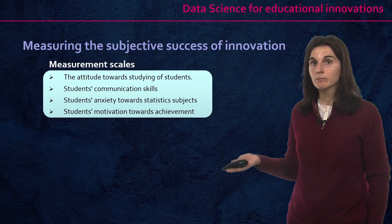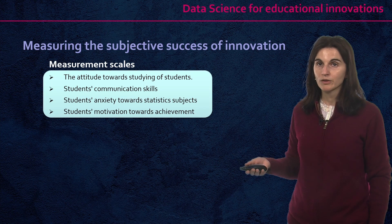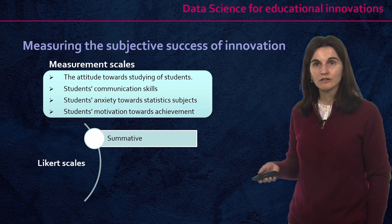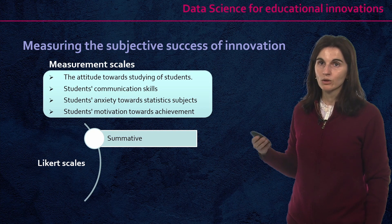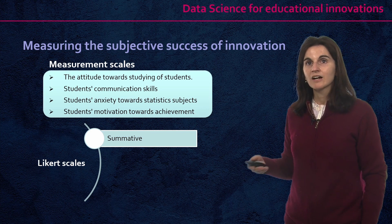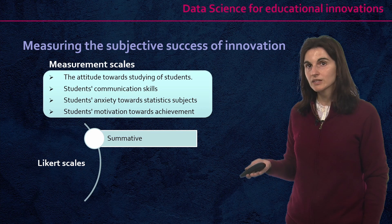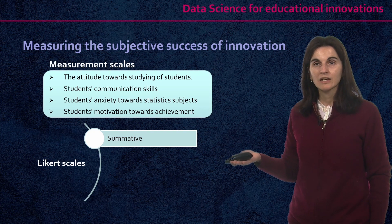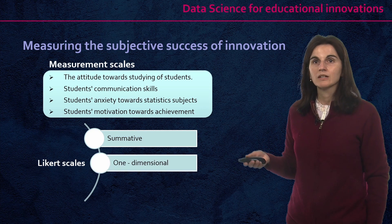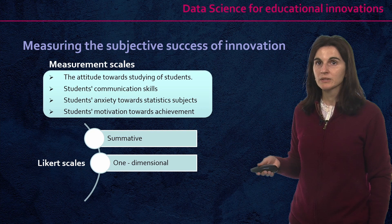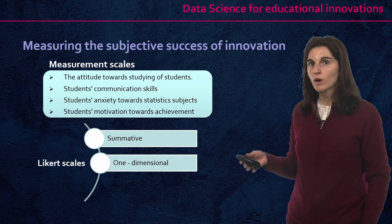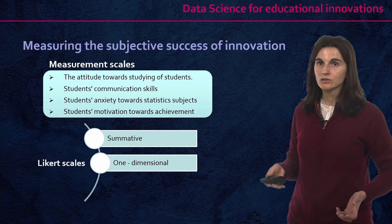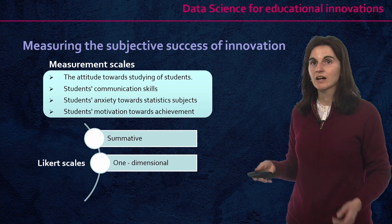There are lots of measurement scales that have been previously validated and are available for our studies. Usually for these measurement scales we will choose Likert scales, which are defined as summative, because when I assign higher scores to this scale it means that I have a high extent of the trait that I am trying to measure. For instance, if my score is higher on a satisfaction scale, that means that I am more satisfied. Also, these Likert scales are one-dimensional, meaning they only measure one dimension, one trait, one psychological construct — such as satisfaction with the teaching process, motivation, or anxiety. Each of these scales has been designed as one-dimensional.